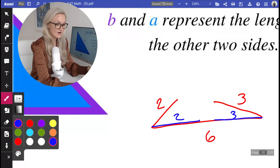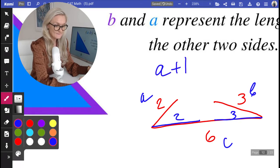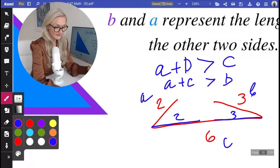So remember this: the sum of two sides. Let's say this was side a, this was side b, and this was side c. a plus b always greater than c, a plus c has to be always greater than b.